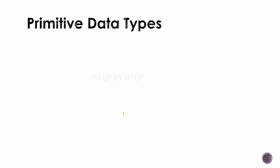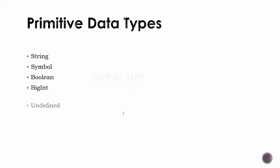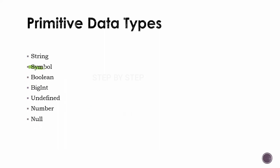Inside primitive data type, we have seven types. We have string, symbol — which was introduced in ES6 — boolean, bigint, undefined, number, and null. Symbol and bigint we will be studying in later sessions, but these are the seven primitive data types present in JavaScript.